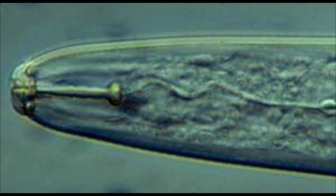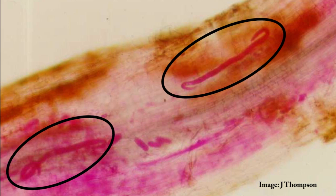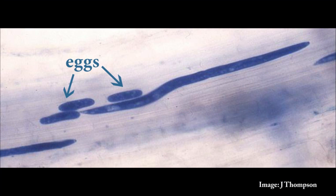Juvenile and adult nematodes penetrate and feed in the root cells. Nematodes are migratory feeders and they move from outside cells towards the middle of the root, searching for fresh and young roots to feed on as older roots die. Female nematodes lay eggs in the roots, and three to four generations of nematodes may develop during a single cropping season. A single female nematode can lay up to 20 eggs several times through the growing season.